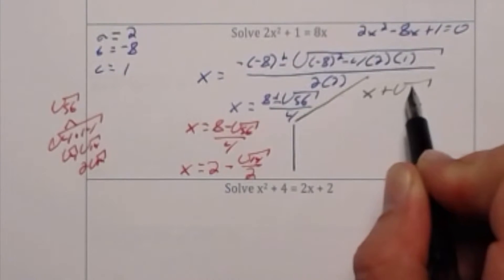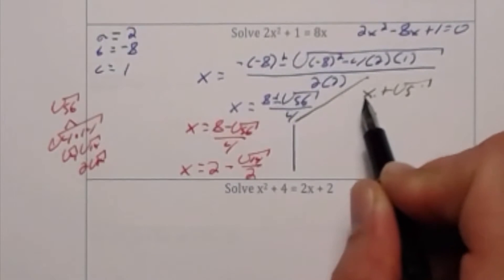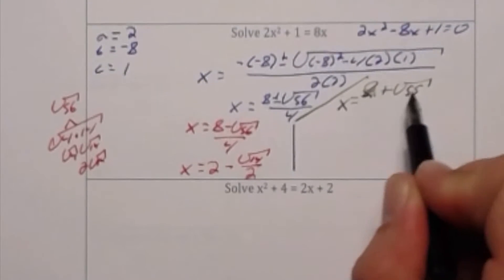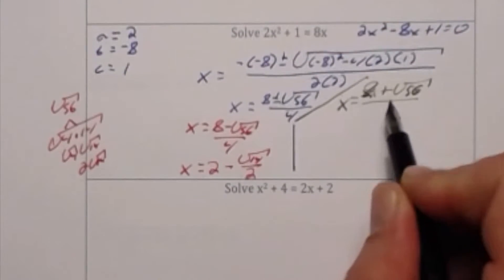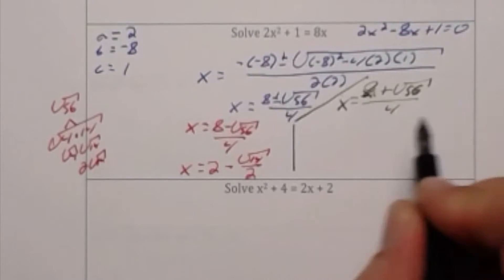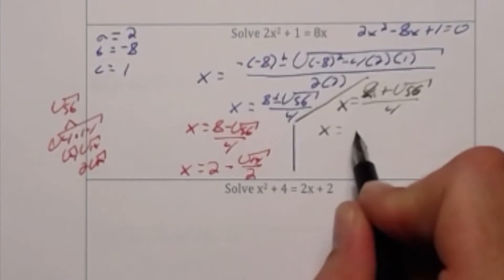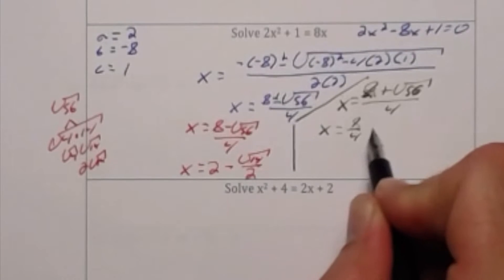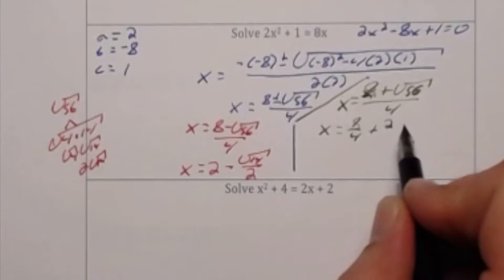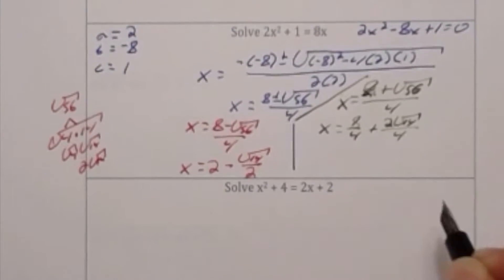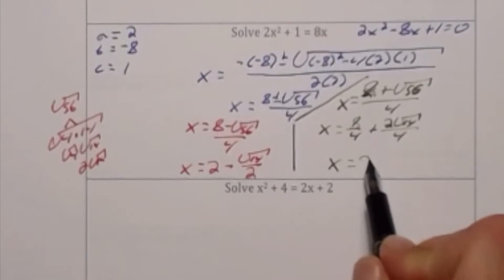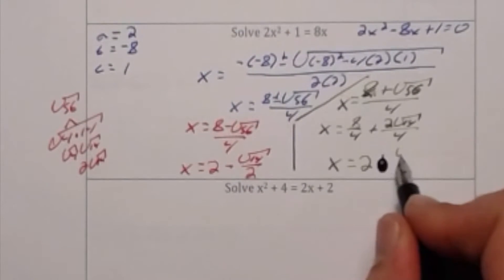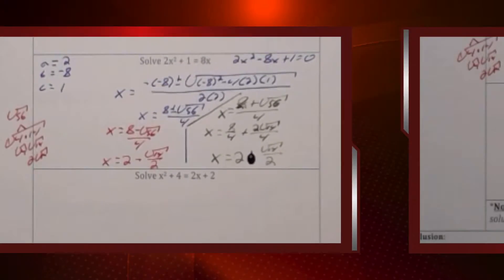If I split up that denominator 4 to show how this simplifies with more detail, I get x is equal to 8 divided by 4 plus 2 radical 14 divided by 4. Because remember 2 radical 14 is the same thing as radical 56. Now all I have to do is simplify those fractions and I get that x is equal to 2 plus radical 14 divided by 2.